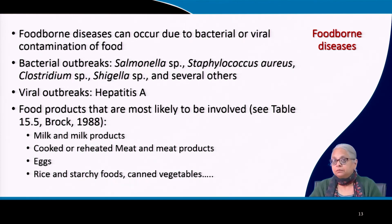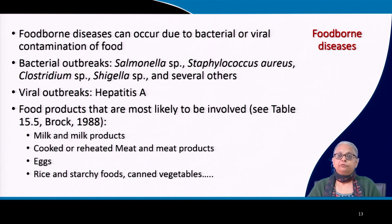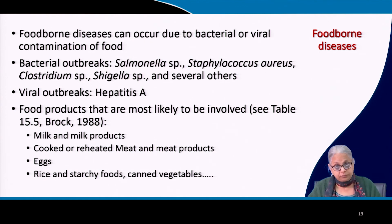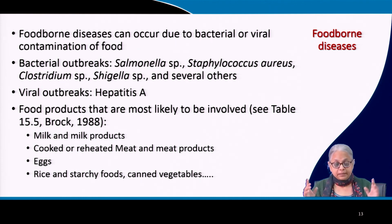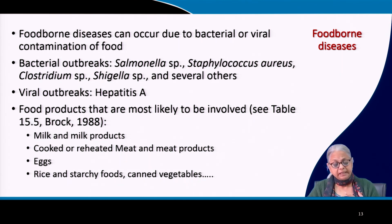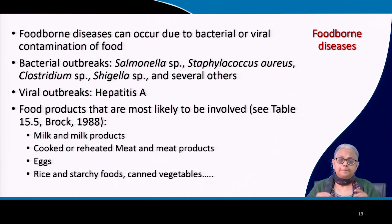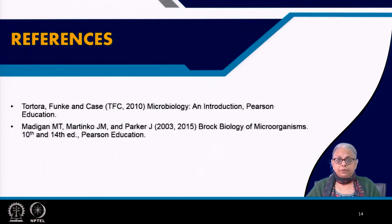Foodborne diseases can occur due to bacterial or viral contamination of food. The most likely food products to be contaminated by pathogenic organisms include milk and milk products, cooked or reheated meat and meat products, eggs, rice and starchy foods, and canned vegetables — all highly vulnerable to contamination by these pathogenic species. I will stop at this point. This brings me to the end of this topic. Thank you.